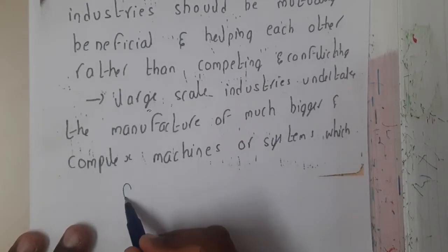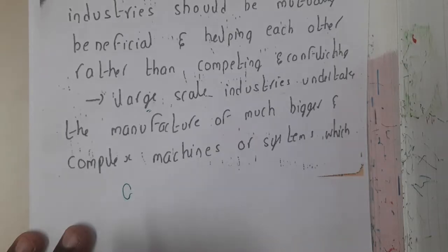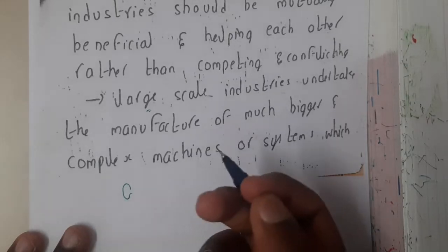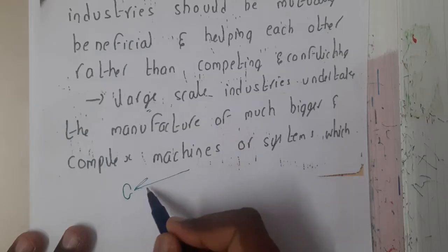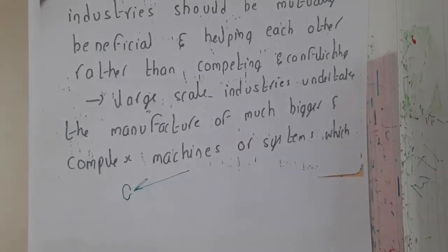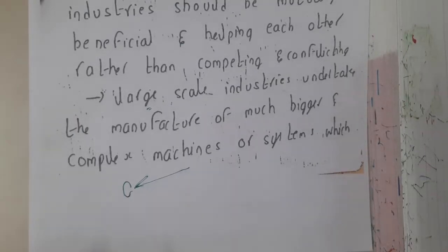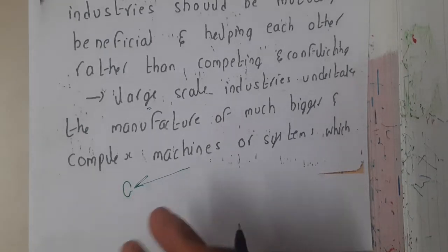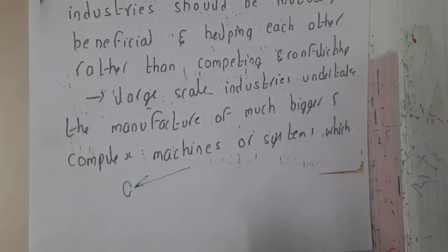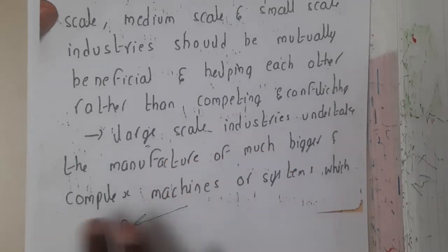Basically, for almost any kind of machinery or thing we use nowadays, it has small nuts and bolts. A particular small scale industry will create them, develop them, and manufacture them. Those nuts and bolts could then be used by any other industries — like medium scale or large scale industries. That is the usefulness of small scale industries.